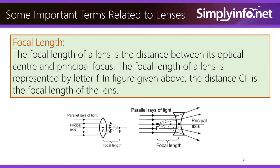Focal Length. Focal length of a lens is the distance between its optical center and principal focus. The focal length of a lens is represented by letter F. In the figure given below, the distance CF is the focal length of the lens.